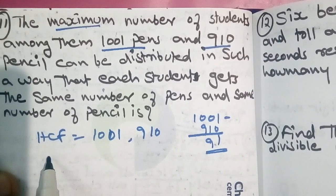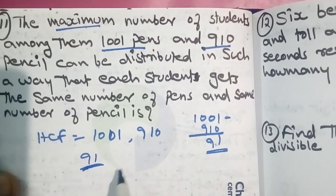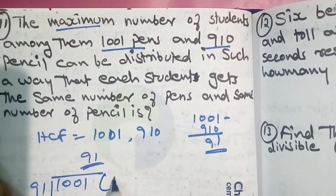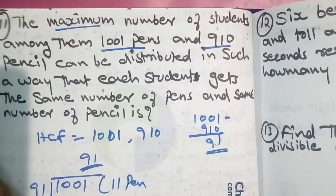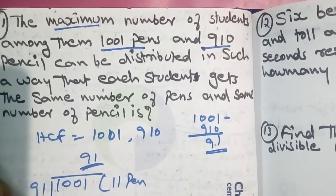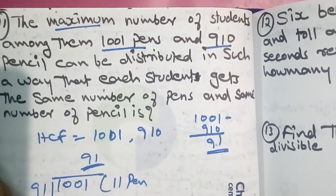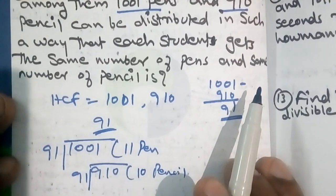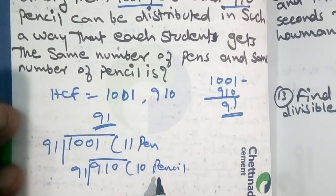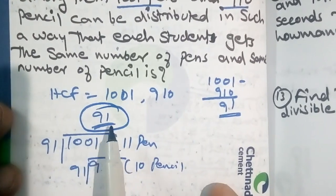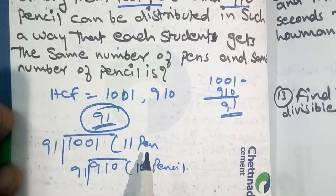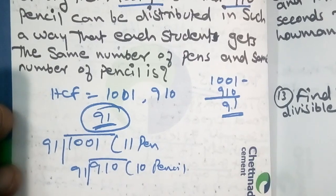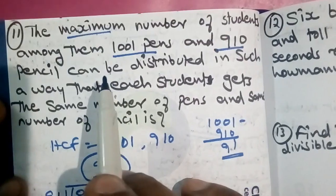Using HCF, that means 11 — so we divide into 11. We divide into 10. Now we distribute this. Each student gets 91 pens and 10 pencils. So we are going to find the maximum HCF.